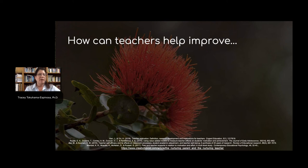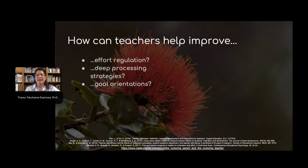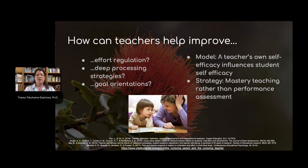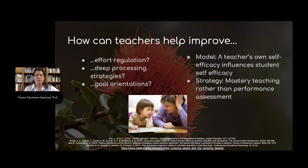The big questions for us are: what can teachers do to improve effort regulation or deep processing strategies in order to enhance self-efficacy? Does it matter how we have relational contact with our students? There are two big ways we can do something about a student's level of self-efficacy. One is to be a model — a teacher's own self-efficacy influences students' self-efficacy. And mastery teaching rather than performance assessment also helps a student confirm higher levels of self-efficacy, because intelligence is not a binary success or no success — students can show progress throughout their learning stages.